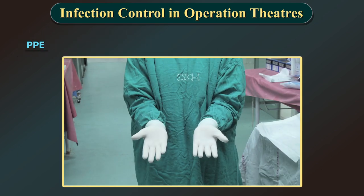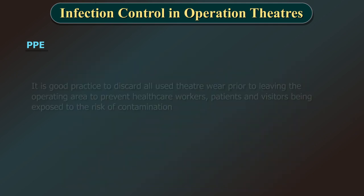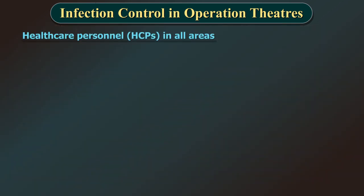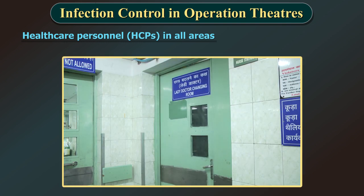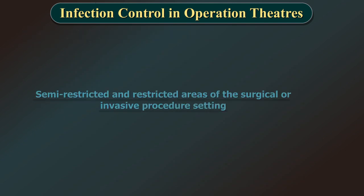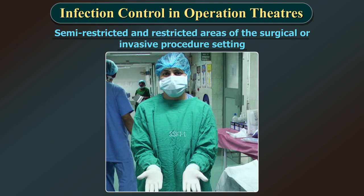Please follow appropriate instructions on donning and doffing personal protective equipment in the operating room. It is good practice to discard all used theatre wear prior to leaving the operating area to prevent healthcare workers, patients and visitors from being exposed to the risk of contamination. Healthcare personnel in all areas should wear dedicated non-sterile attire and keep their movements in and out of the operating room to a minimum. In semi-restricted and restricted areas, staff should wear clean surgical attire including shoes, head covers, surgical masks and identification badge.